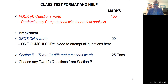Section B has three questions — you choose two from three. So overall: four questions, you must answer three. Section A — Question 1 — is entirely compulsory. In Section B, three questions are given and you choose two.